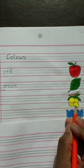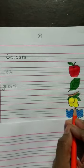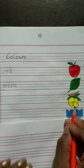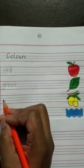What are these? These are mangoes. And what color is this? This is yellow. Now here we will write yellow.